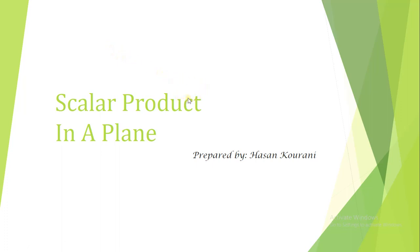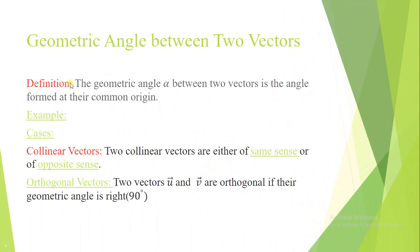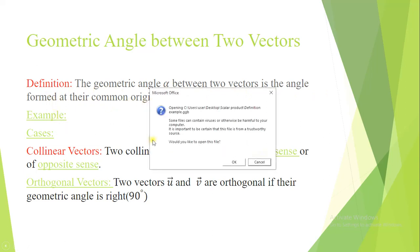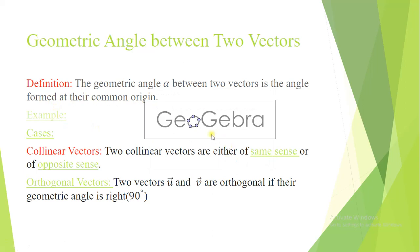Before we start the definition of scalar product, we need an important concept: the geometric angle between two vectors. The definition says that the geometric angle alpha between two vectors is the angle formed at their common origin. Let's see an example on GeoGebra.